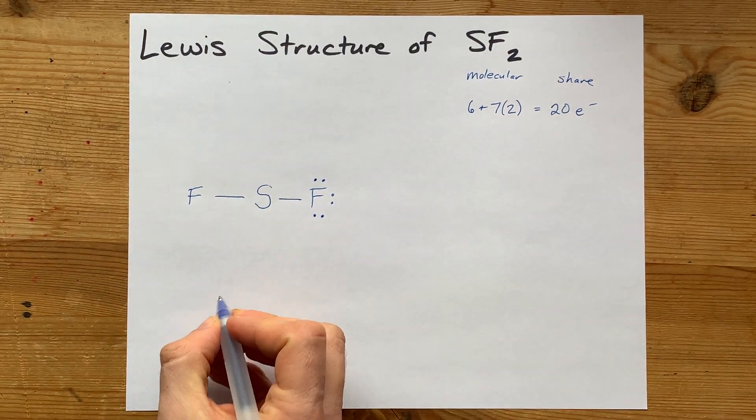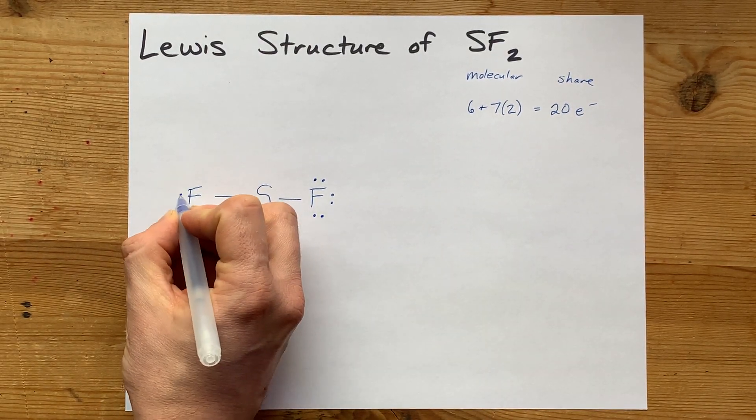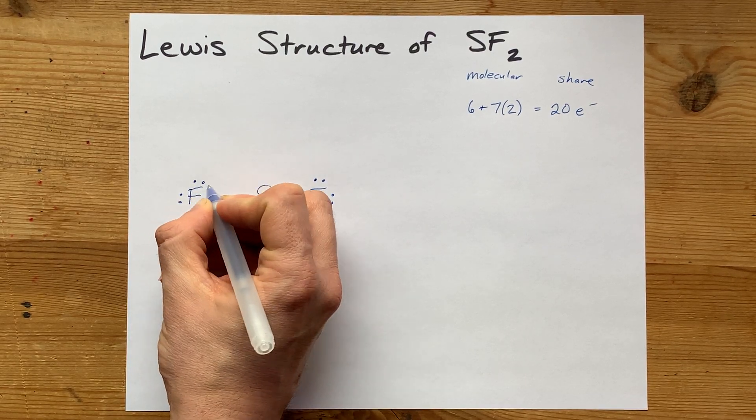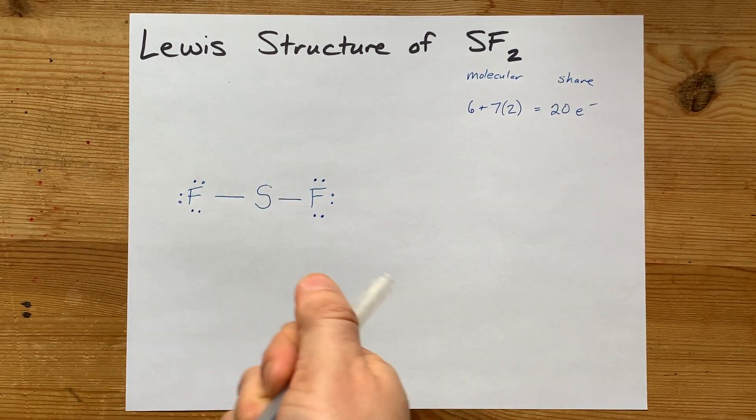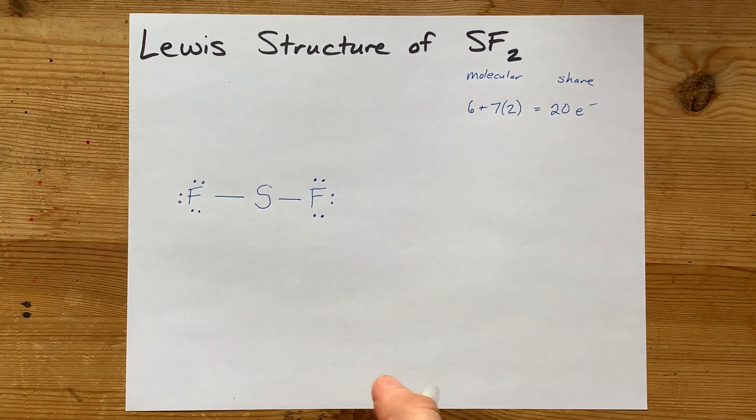And then I've got to do the same for this F: third, fourth, fifth, sixth, seventh, and eighth. Now I've satisfied the octet rule for both of those fluorines.